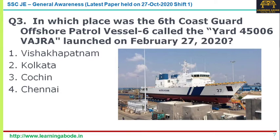This sixth ship is part of a seven-ship series built by the famous Larsen & Toubro (L&T) under the Make in India policy. The sixth one was launched on 27th February 2020 in Chennai. Answer option four — Chennai — is the answer for question number three.